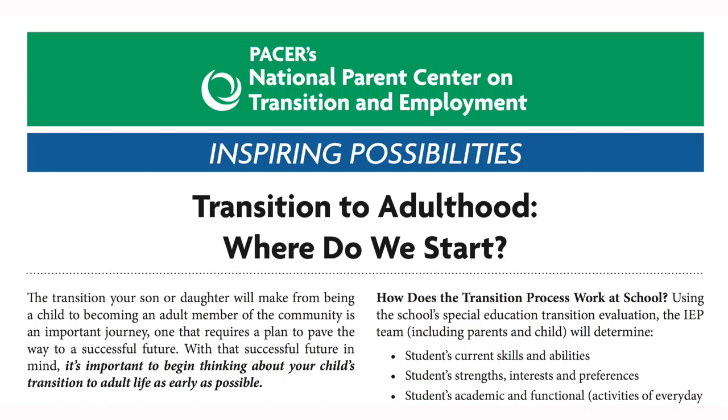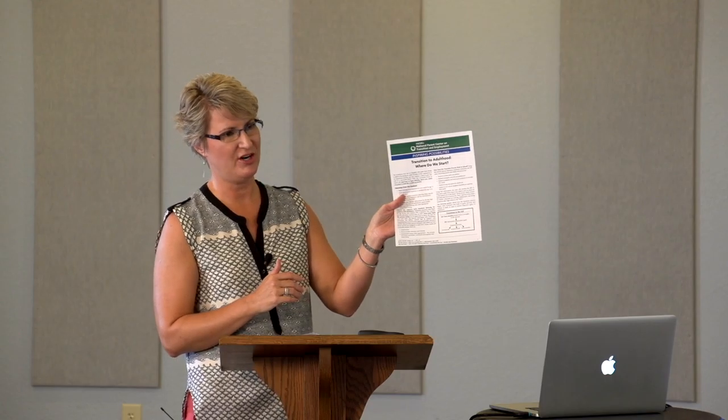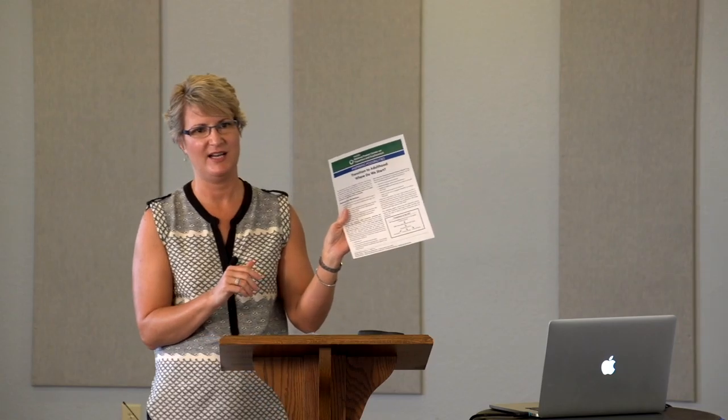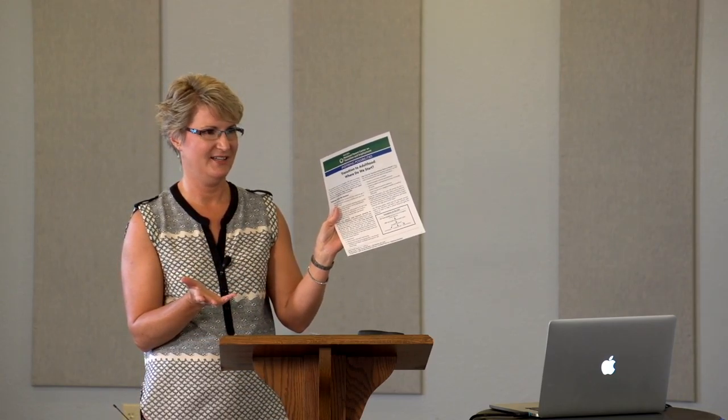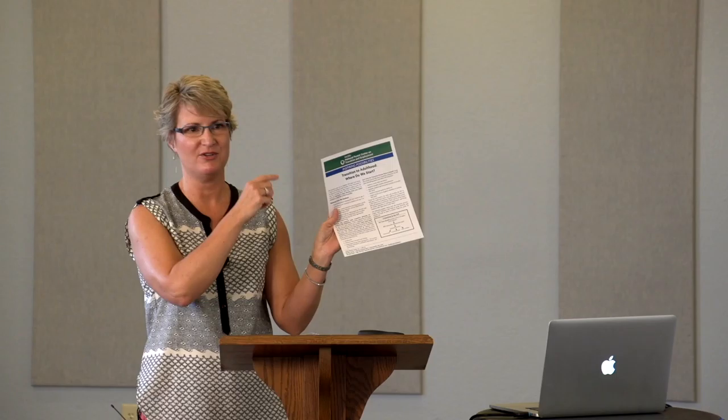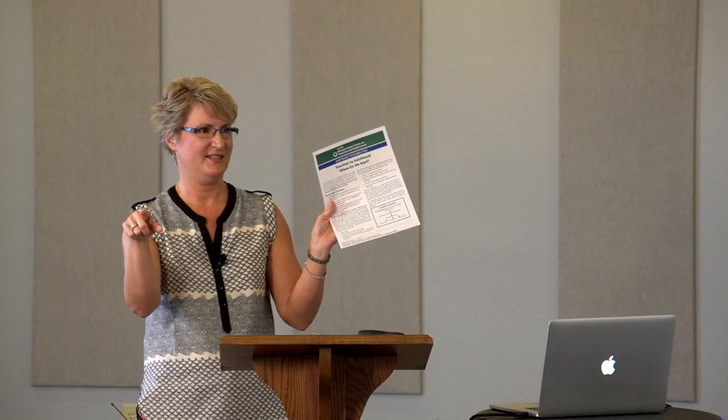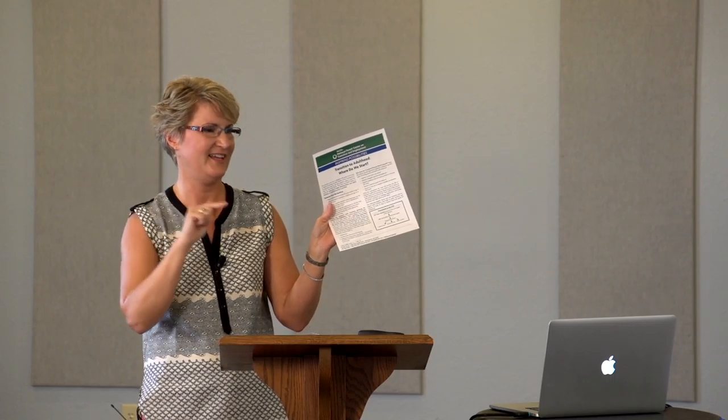The brochure 'Transition to Adulthood: Where Do We Start?' has a simple chart I really love. It shows how the IEP team identifies strengths, then goes to measurable post-secondary goals, transition services, annual goals, course of study, and other activities. Parents look at the transition page in the IEP and just don't get it — they don't understand how the annual goals relate to the post-secondary goals. This is a really good explanation that we are looking at things after high school, not just what's happening in high school.